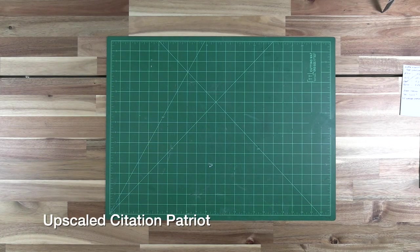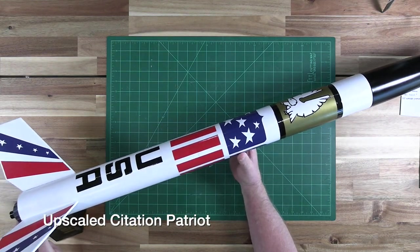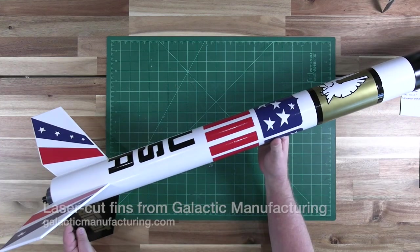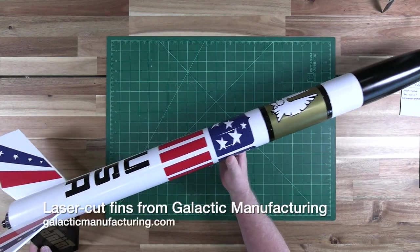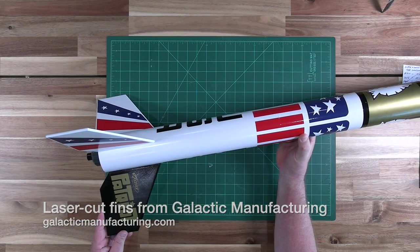I've also had a couple of Big Red Max based clones cross my workbench lately. This is an upscaled Citation Patriot, won't even fit under the camera. And my good friend Mike Nowak assisted by laser cutting the plywood fin cores used for this project.